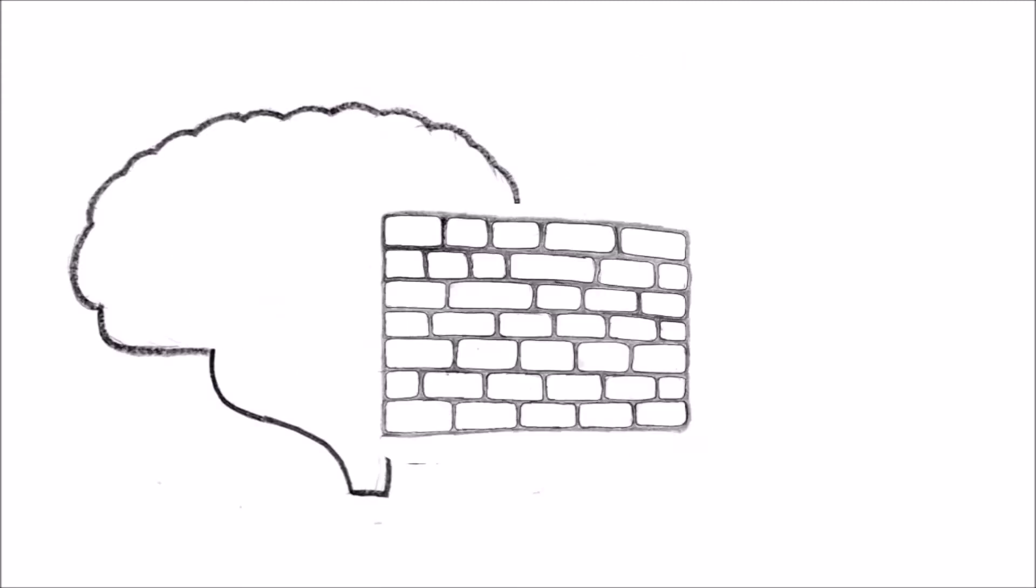But what about the brain? It needs those things as well. The blood-brain barrier makes sure that the blood vessels in the brain are tightly sealed, so nothing can leak out. These seals are called tight junctions. They are made up by proteins that link tightly together.